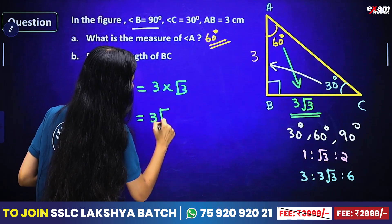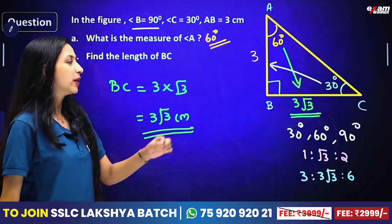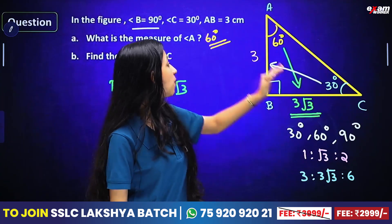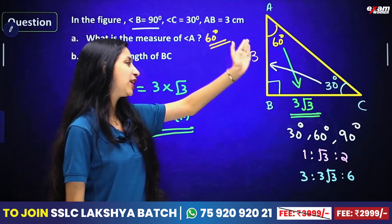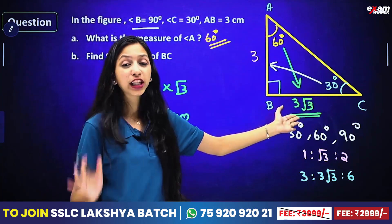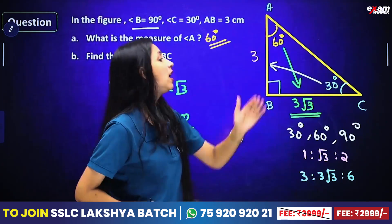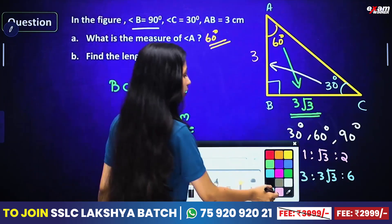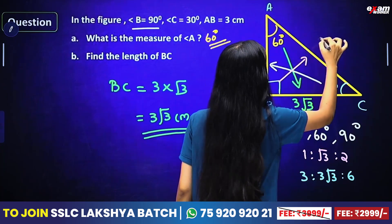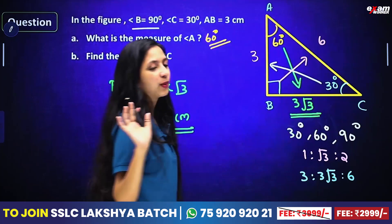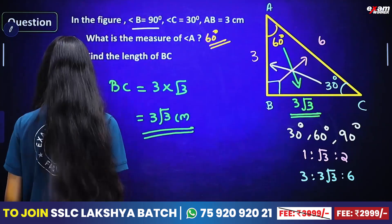It means that the 30 opposite is already 3. On the other hand, we do the 6 values — this is also root 3, that is 3 root 3 centimeters. The 90 opposite is 6 — it means that it is 6, a double. You will notice another problem.